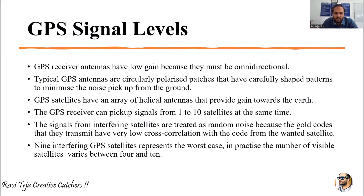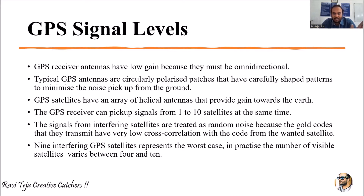Signals from interfering satellites are treated as random noise. Because of the Gold codes — the C/A codes, P codes, or pseudo codes — they can be transmitted with low cross-correlation with the code from the wanted satellite. Whichever signal is strongest, the cross-correlation with that particular satellite will be done successfully.